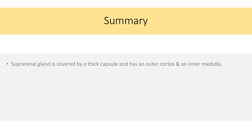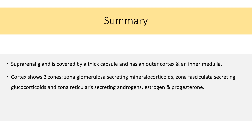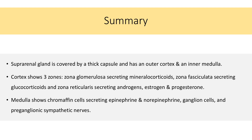In summary, the suprarenal gland is covered by a thick capsule with an outer cortex and inner medulla. The cortex shows three zones: zona glomerulosa secreting mineralocorticoids, zona fasciculata secreting glucocorticoids, and zona reticularis secreting androgens, estrogen, and progesterone. The medulla shows chromaffin cells secreting epinephrine and norepinephrine, ganglion cells, preganglionic sympathetic nerves, and central adenomedullary veins.